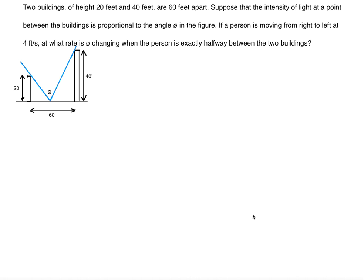In this video we're going to discuss a complex related rates problem dealing with angles and trigonometry. Two buildings of height 20 feet and 40 feet are 60 feet apart. The intensity of light at a point between the buildings is proportional to the angle phi in the figure. If a person is moving from right to left at 4 feet per second, at what rate is phi changing when the person is exactly halfway between the two buildings?